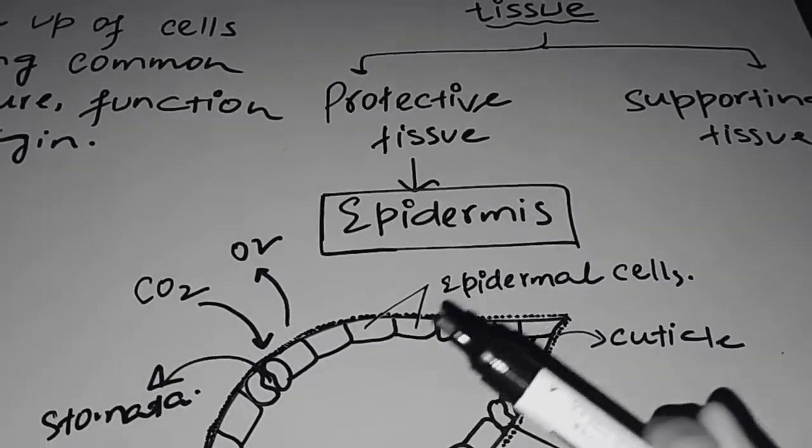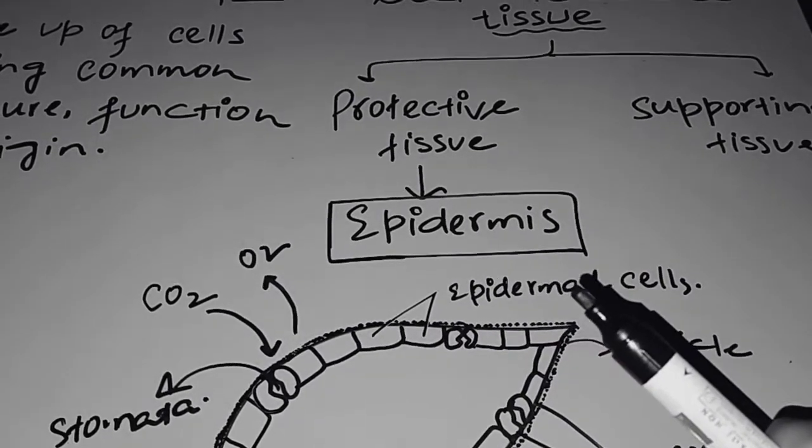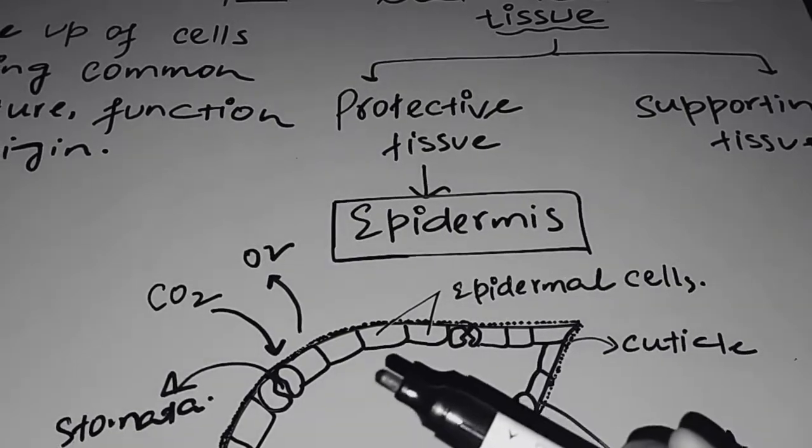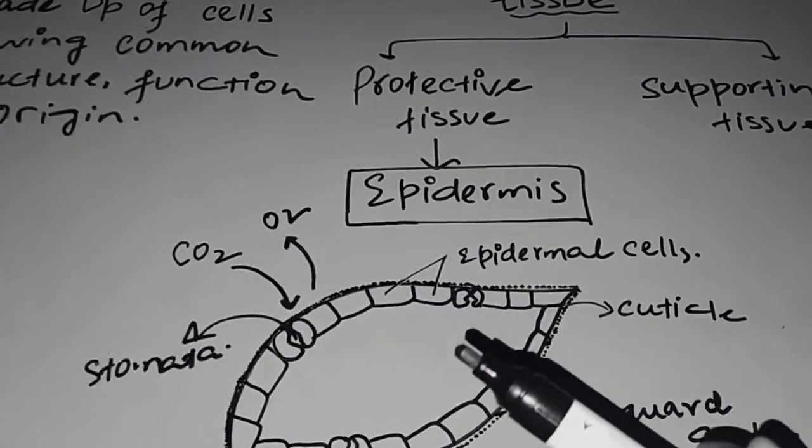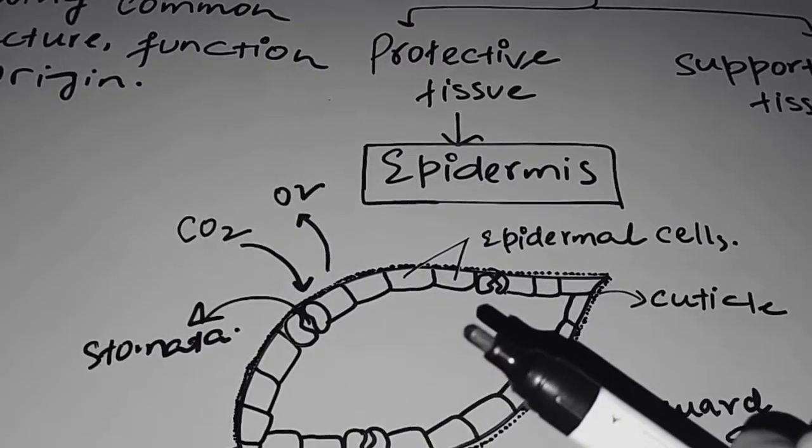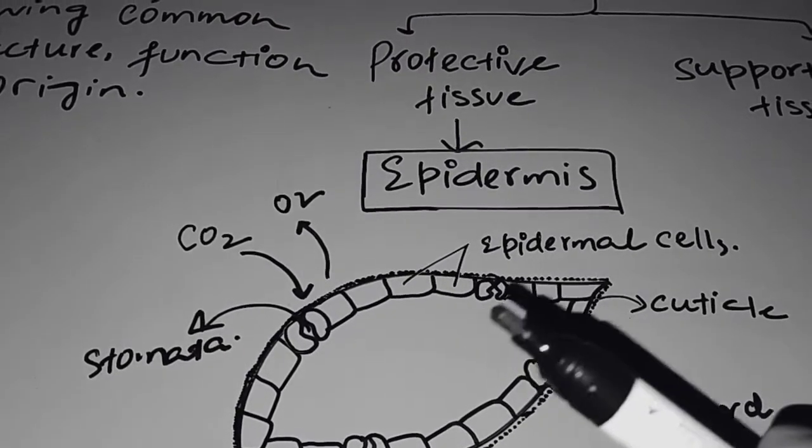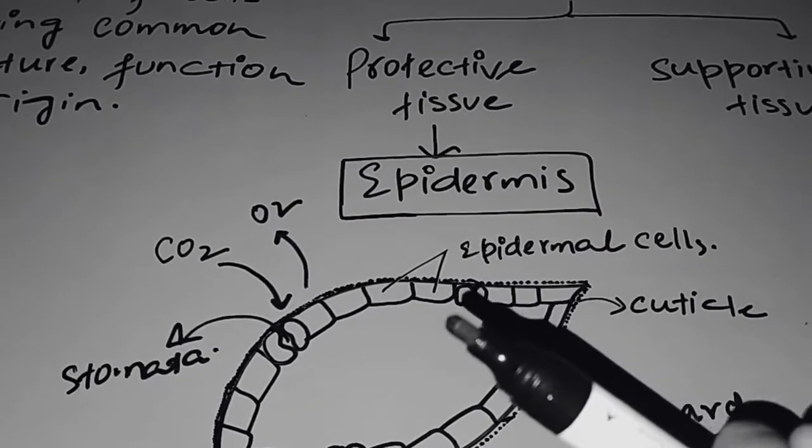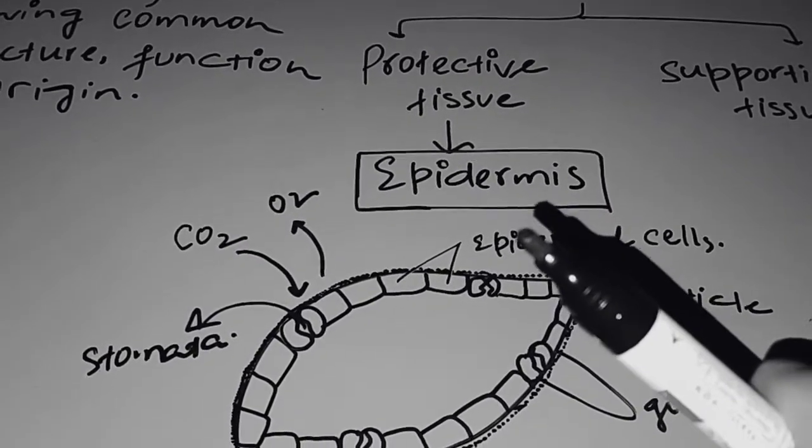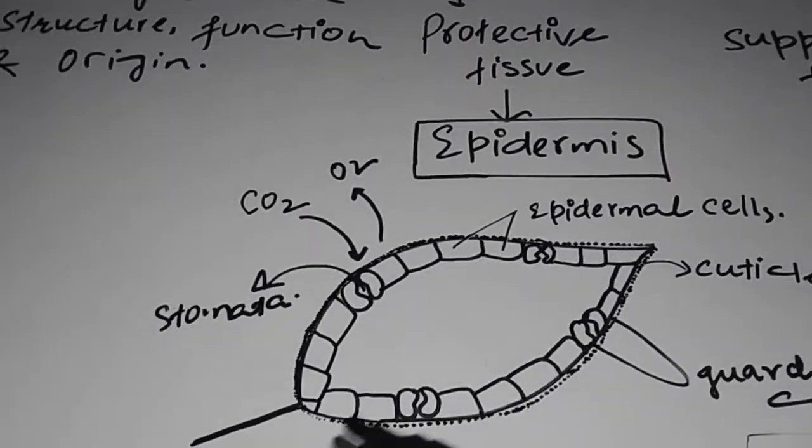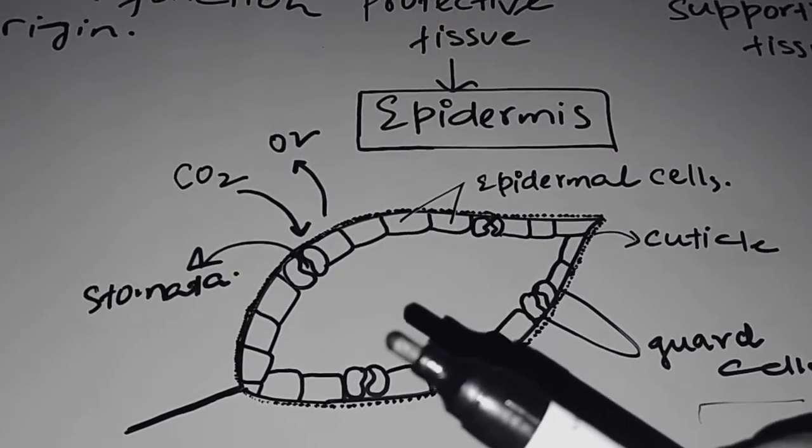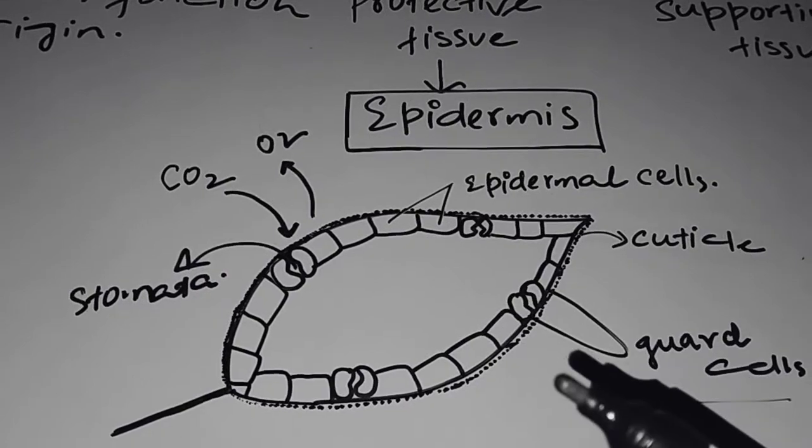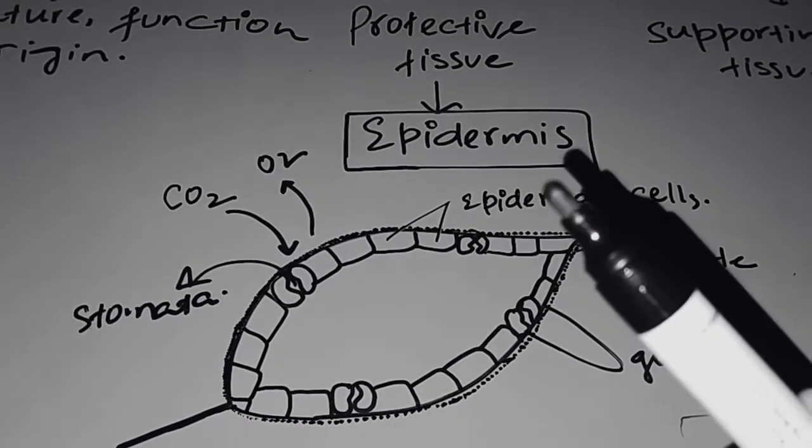So epidermis is a protective tissue. It's made up of cells which are called as epidermal cells. If we talk of epidermis, they are usually polygonal or rectangular. They are closely packed and they have no space. Intercellular space and extracellular space is absent in case of epidermis. Okay, so here I have a leaf structure.